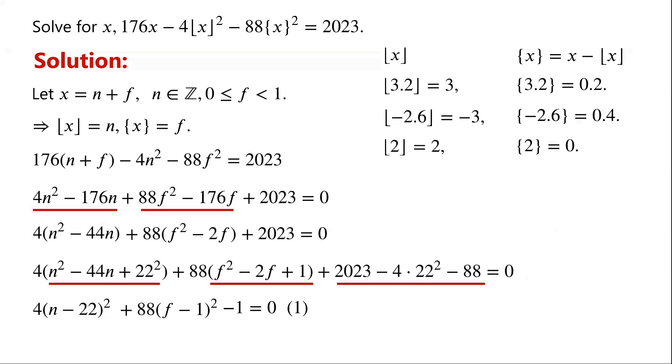So we have 4 times (n minus 22) all squared, plus 88 times (f minus 1) all squared, minus 1, equals 0. Call this equation 1.